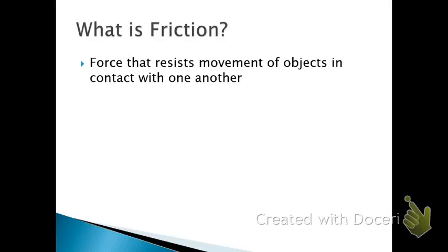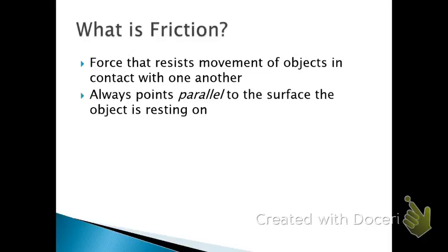It's basically a force that resists the movement of objects when they're in contact with one another. So think about any sort of object resting on a surface as it's sliding or attempting to slide. Friction is what tries to push back the other way to stop it. And the force of friction is always parallel to the surface that the object is resting on.